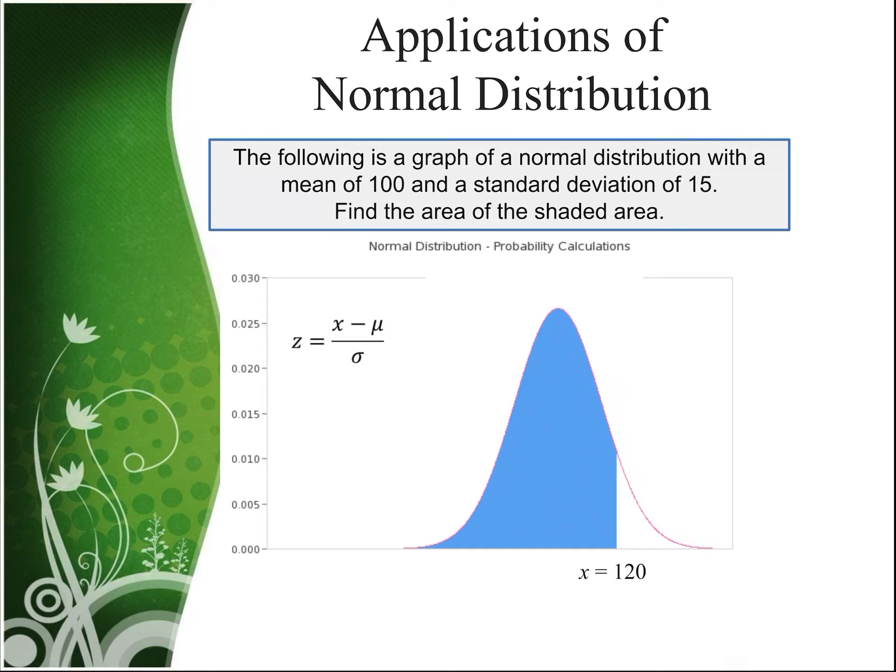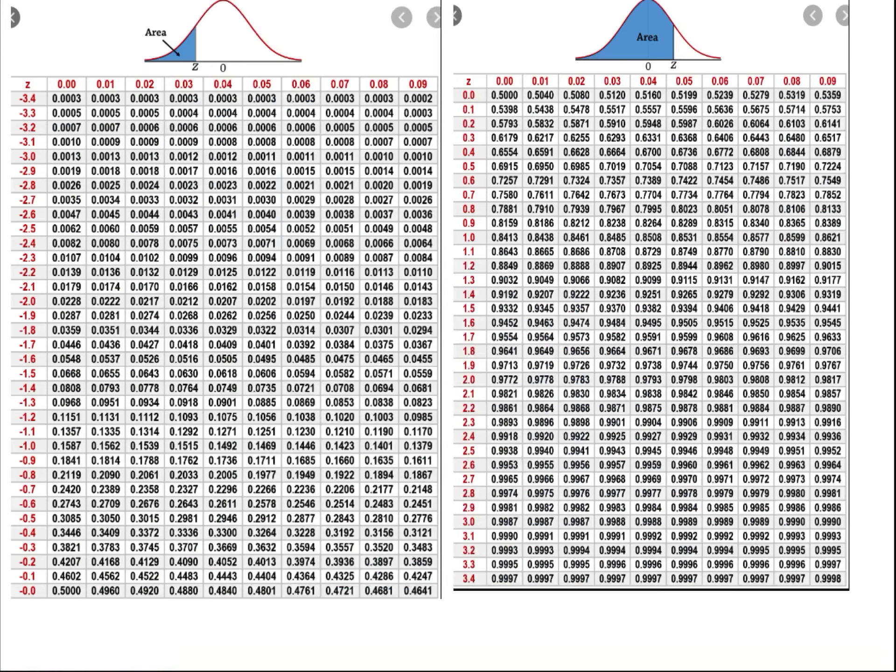So if we use x is 120, the mean is 100, and the standard deviation is 15, we have 120 minus 100 over 15 gives us a z-score of 1.33. Once we calculate our z-score, now we can use our standard normal distribution table to figure out the probability.